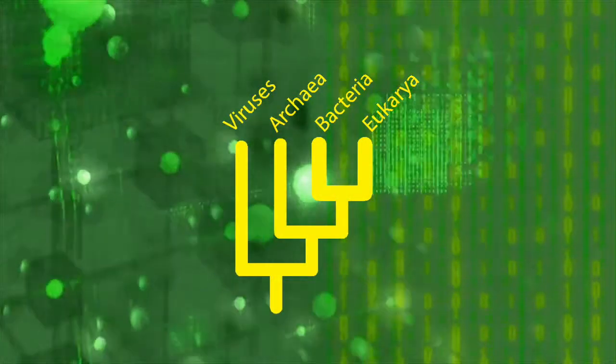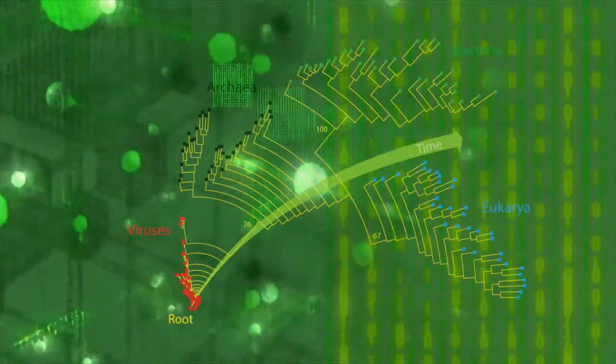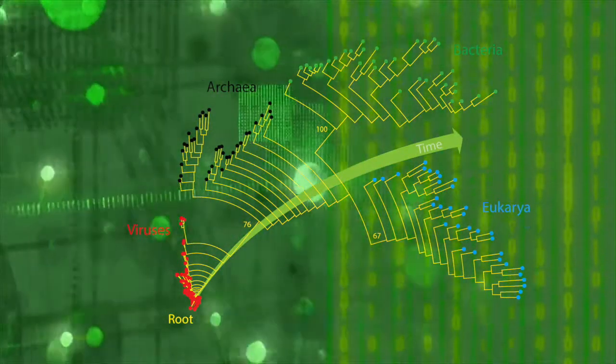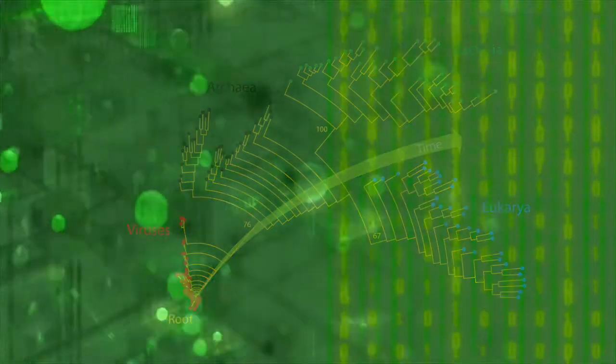A variant of these 3D trees also includes viruses. It places the root of the tree within a branch leading to viruses, which technically makes it a 4D tree.